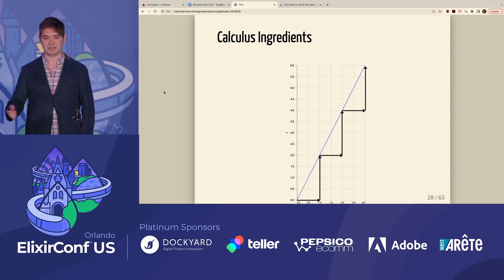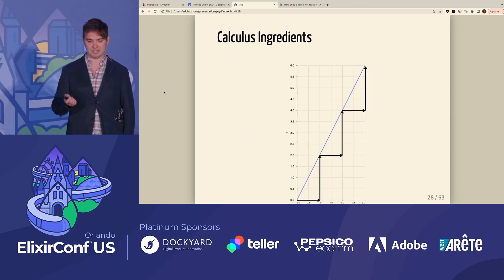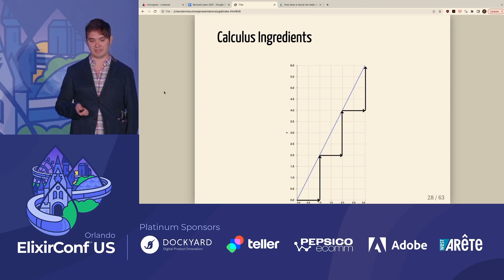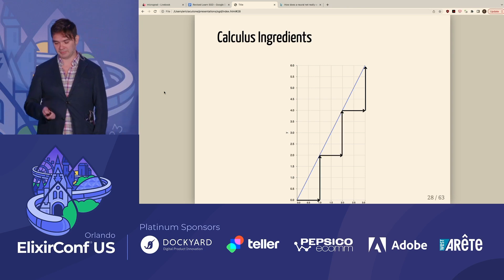Here it is graphed out. For example, if X input is 1, it's going to double the value to 2. 2 to 4, 3 to 6, and so forth.